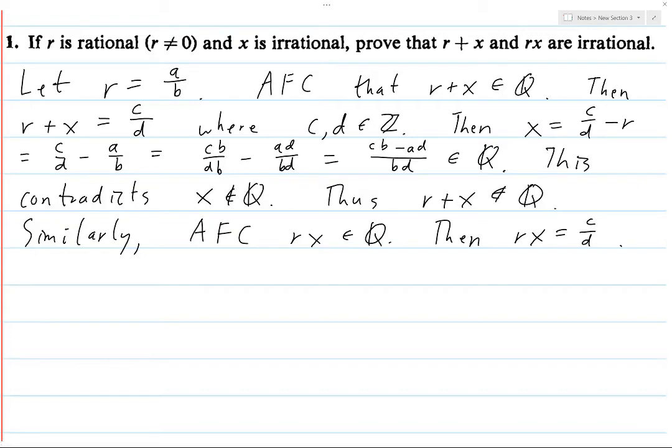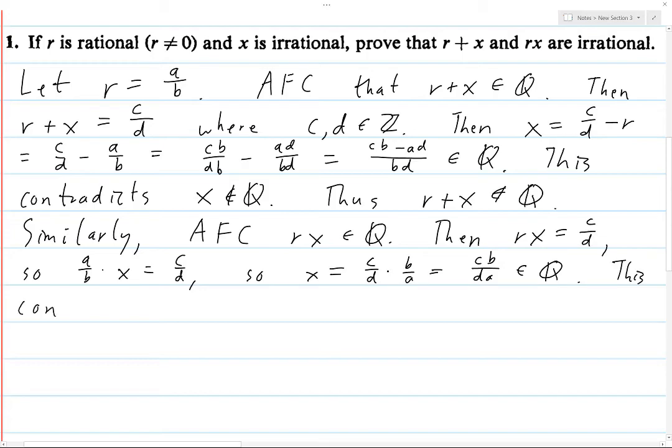so what can we do? Well, we can just multiply. So R is A over B. So A over B times X is C over D. So if we multiply both sides of this equation by B over A, then that will cancel with the A over B on the left side. And so we'll just get X is equal to C over D times B over A. And so this is CB over DA. And this is a rational number. But again, this contradicts the fact that X is not in the rational numbers.